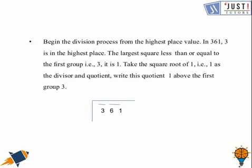After this begin the division process from the highest place value, that is 3 here which is at 100th place. Then the largest square less than or equal to the first group that is 3. So this first group we need to think of a largest square which is less than or equal to this number. That is 1.